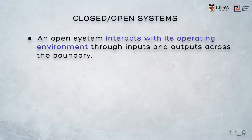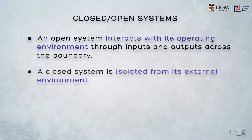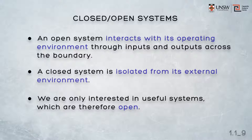An open system interacts with its operating environment — that is, it's open. It accepts inputs from that environment across its boundary, and returns outputs across the same boundary back into its external environment. A closed system, on the other hand, is isolated from its external environment. We are only interested in useful systems, which must therefore be open.